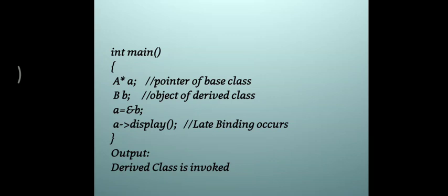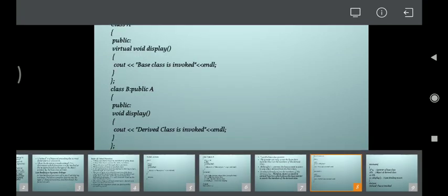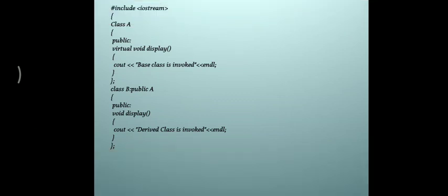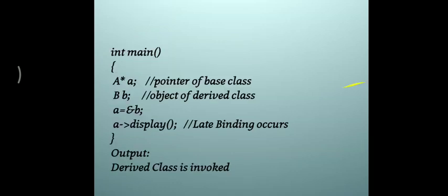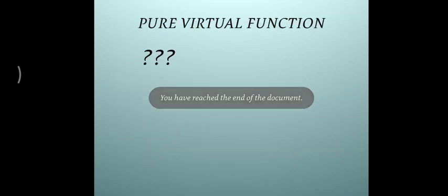Another term is the pure virtual function. If the base class contains a virtual function that is not defined in the base class, it becomes a pure virtual function. A pure virtual function must be defined in the derived class. A class that contains a pure virtual function becomes an abstract class. That's all for virtual functions in C++. I hope you got the concept. Thank you.